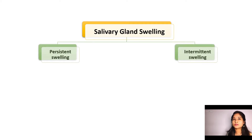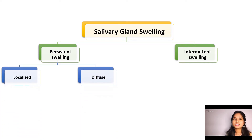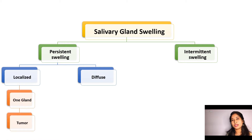Salivary gland swelling can either be a persistent swelling or an intermittent swelling. If it is a persistent swelling, we have to see whether it is a localized swelling or a diffuse swelling. If it involves a localized swelling, it mostly involves one gland — mostly it would be a tumor.